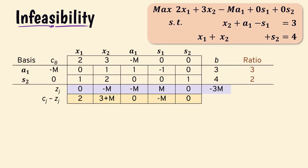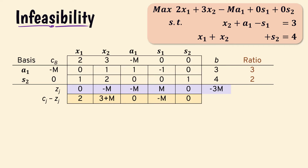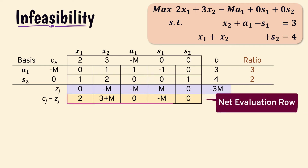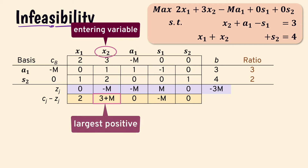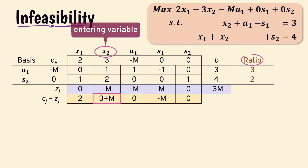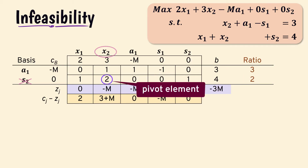Here we have the initial simplex tableau for the problem. The most positive value in the net evaluation row is 3 plus M, which makes x2 the variable entering the basis. The smallest ratio is 2, which makes s2 the variable leaving the basis, and 2 is the pivot element.